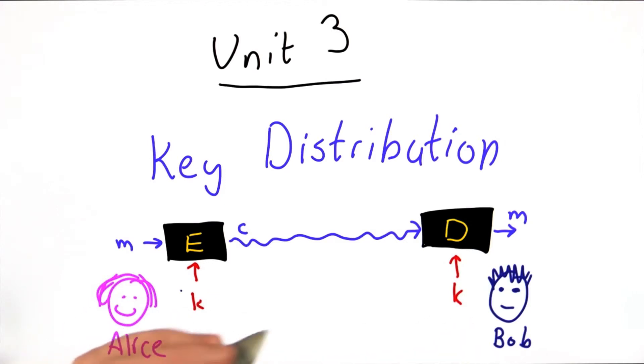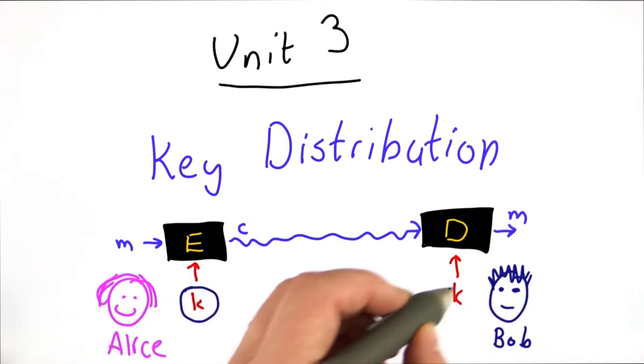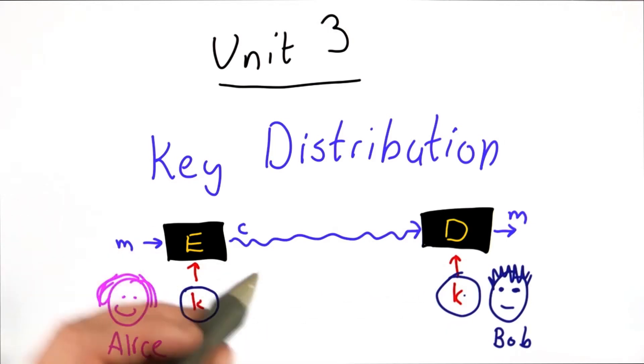If Alice and Bob want to talk together, they have to first agree on this secret key. There has to be a way for Alice and Bob to communicate that key without exposing it. They can't send it over the insecure channel. If they could send a secret key over an insecure channel, they wouldn't need encryption at all.